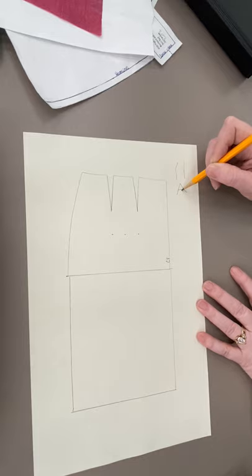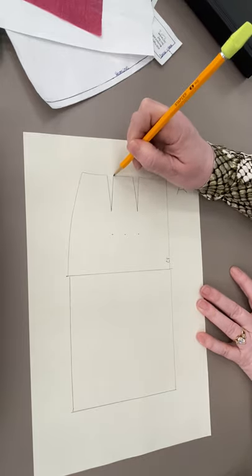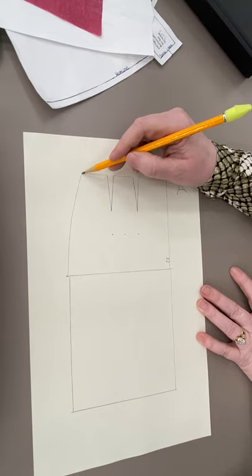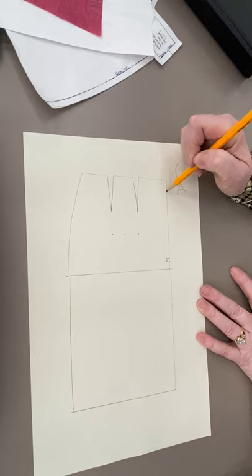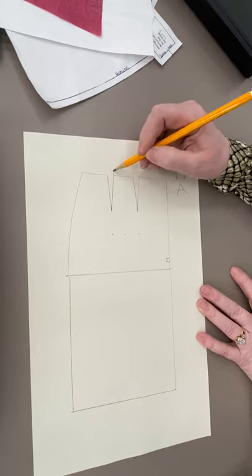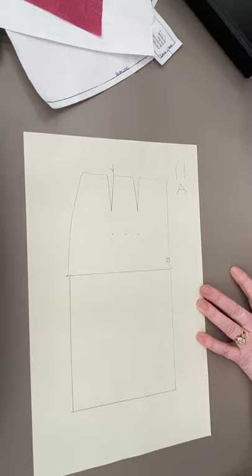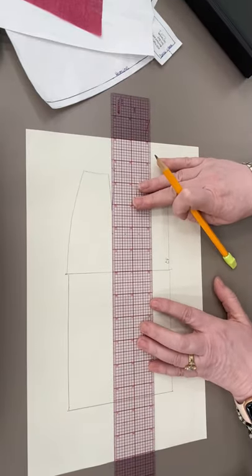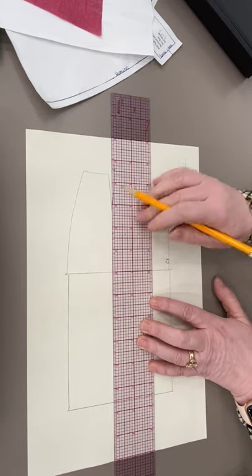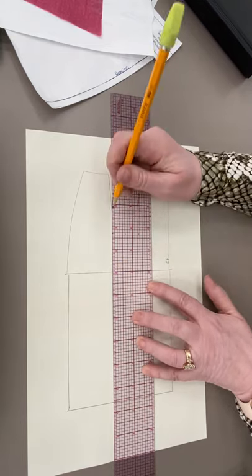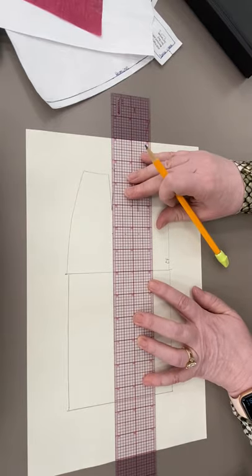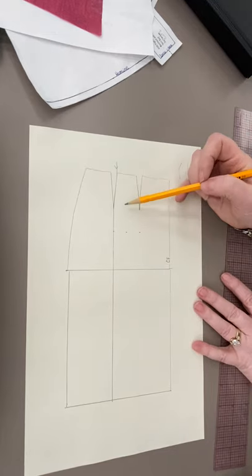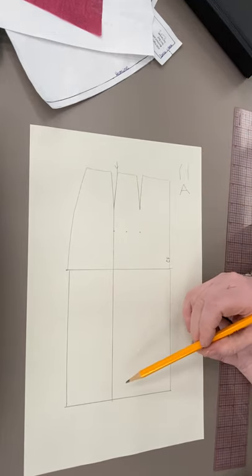We are going to cut down the fold line of our outside dart. So the dart that is closest to our out seam, not the dart that is closest to our center front. And we're going to cut down the fold line, so that means this one right here. We're going to cut all the way down to our hemline. And we need to make sure that this line stays perpendicular to our hipline. So basically you're putting in a crease mark right on that outside dart.